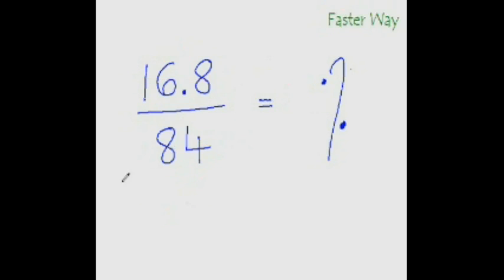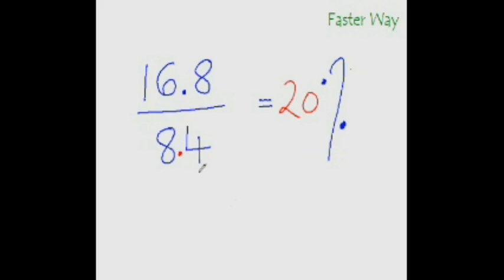The faster way of finding the percentage equivalent of a fraction is to look at the denominator and ask yourself: what percentage of this denominator is the numerator? Ten percent of 84 would be 8.4, but the numerator is more than that, so the answer is more than ten percent. Let's take twenty percent — double of 8.4 is 16.8, and voila, we have the right answer: twenty percent.